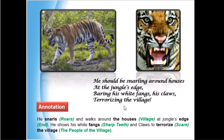Now stanza three: 'He should be snarling around houses at the jungle's edge, baring his white fangs, his claws, terrorizing the village.' 'Snarl' means roars and walks around the houses, village, and jungle's edge. 'Jungle's edge' means the end, boundaries, or borders of the jungle. 'Fangs' means sharp white teeth. 'Claws' and 'terrorize' means to scare the village people.